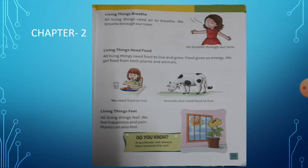Children, next page — open page 17. See here. Living things breathe. Living things need food. Living things feel. Living things move. Living things grow. Living things give birth. So, children, now three options are here. See here: living things breathe — first option.